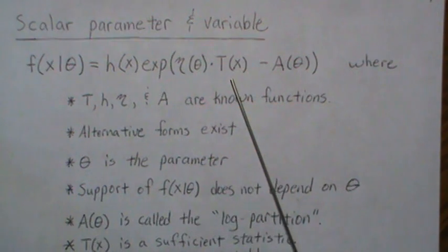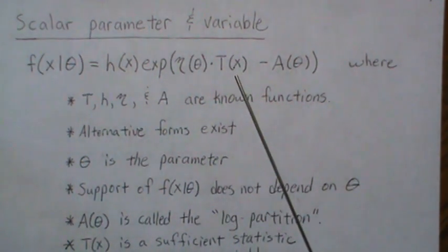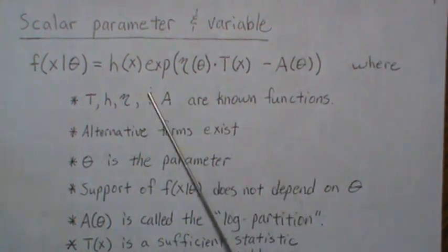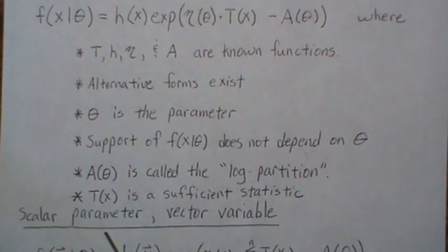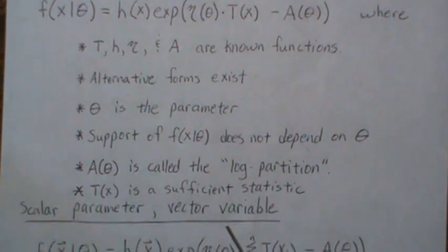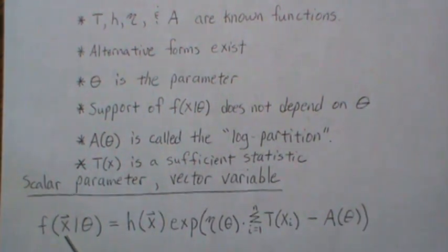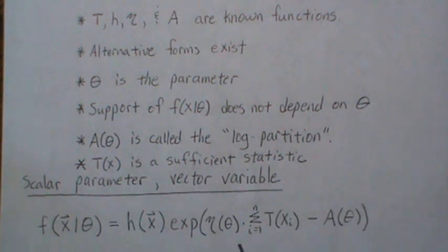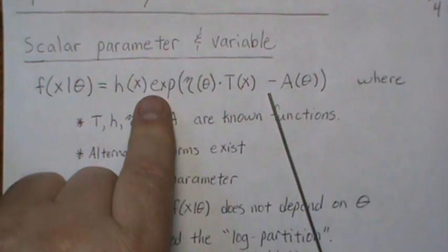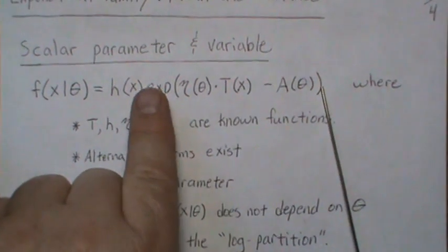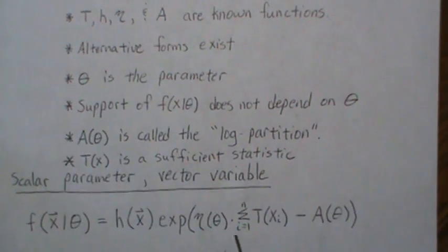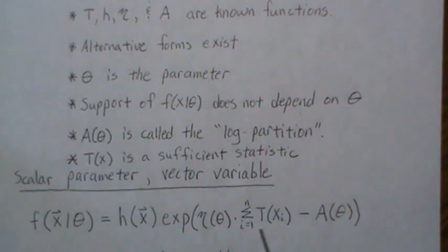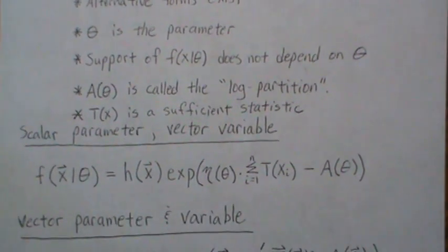T is a sufficient statistic — we're not going to get into what that means in this video, but that's what it is. Now let's look at a scalar parameter with a vector variable, i.e., a sample of size n. The joint PDF can be written in this form, and this makes sense because you're taking the product — since these are e raised to exponents, multiplying them means adding the exponents, and that's what this expression is saying.